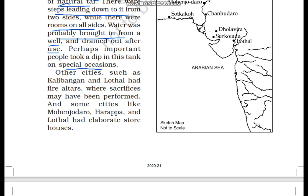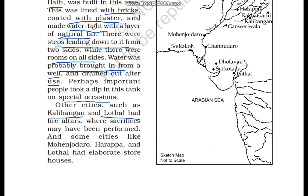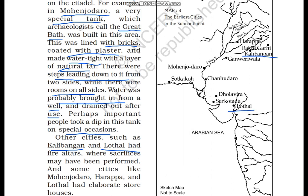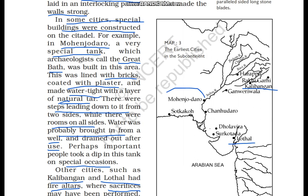Special locations were meant for important persons. In cities like Kalibangan and Lothal, here you can see fire altars where people performed sacrifices. In cities like Mohenjodaro, Harappa, and Lothal, there were storehouses — like our godowns today — where grain and other goods were stored. You can see Mohenjodaro and Harappa marked on the map.